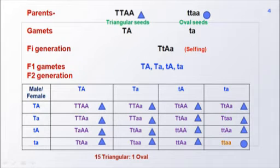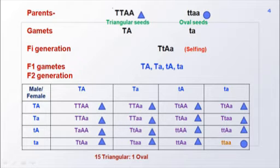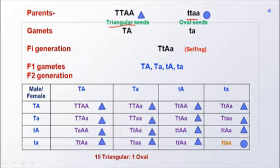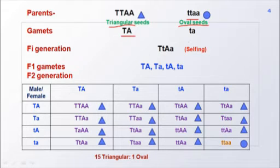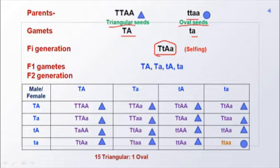Looking at the cross in more detail: the parents selected are homozygous. One type of parent has triangular seeds, and the recessive parent has oval seed-shaped capsules. These give rise to gametes, and as usual the F1 generation gives rise to heterozygous offspring containing alleles of both parents. This heterozygous F1 produces triangular seeds.